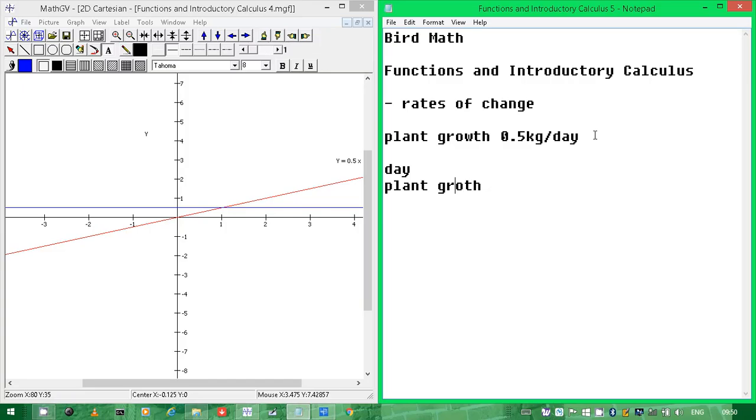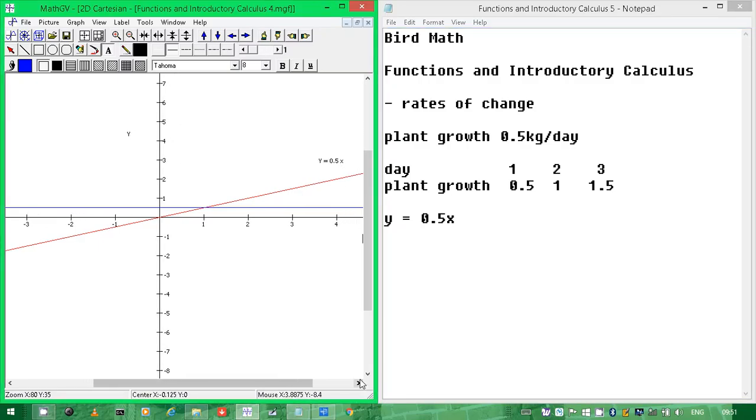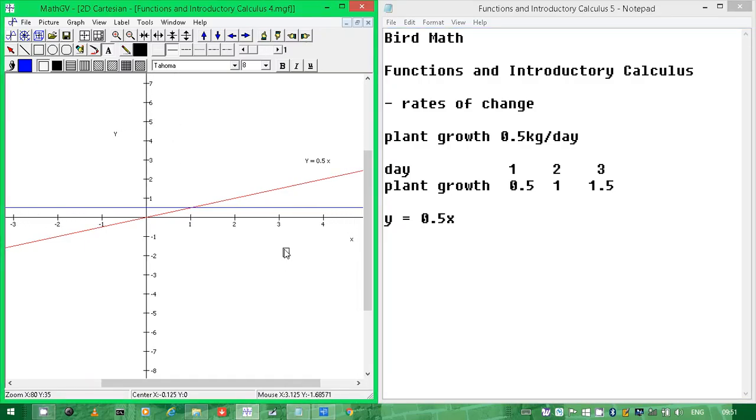So the growth ended up looking like this: day 1, 0.5; day 2, 1; day 3, 1.5. And that was constant. Then we ended up working out that the function would have been y equals 0.5x, which is this red. Y equals 0.5x for y and x.